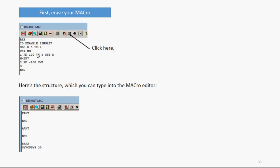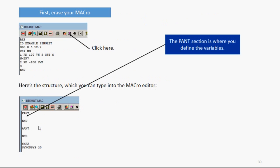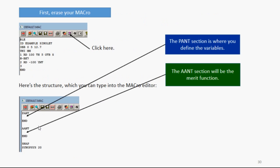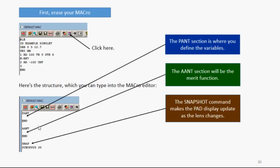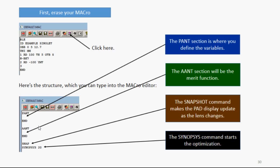First, let's erase the macro you made before. Click the erase macro button, and then type this new stuff into the macro editor. In the PANT section, that's going to define the variables. In the ANT section, that's going to be your merit function. The snapshot command makes the PAD display update, which you can watch it change, which is always fun to do. And then the Synopsis command starts the optimization.